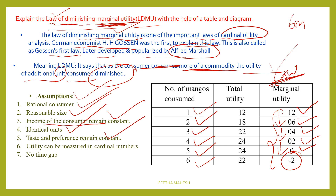Taste and preference of the consumer must remain constant. For example, if the first and second apple are very good quality, but the third and fourth are different, the taste preference has changed, which would violate the assumption.